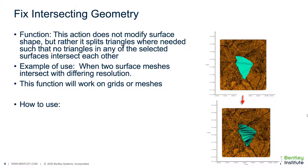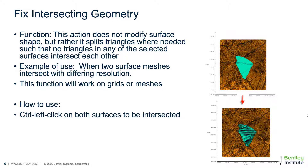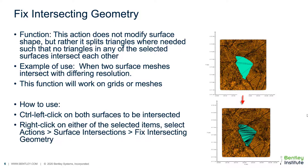One function is titled Fix Intersecting Geometry. This functionality is used when two surfaces intersect each other but it is not a clean intersection — in other words, there are triangles that are split by the intersection. Engaging this function ensures that no triangles are split at the intersection between surfaces. It can be accessed by selecting both surfaces while holding the control key, then going to Actions, Surface Intersections, Fix Intersecting Geometries to initiate the intersection algorithm.